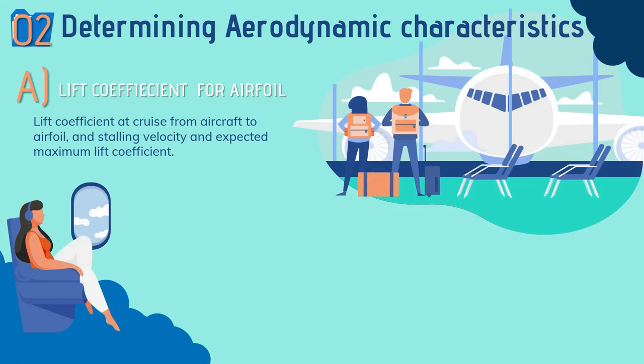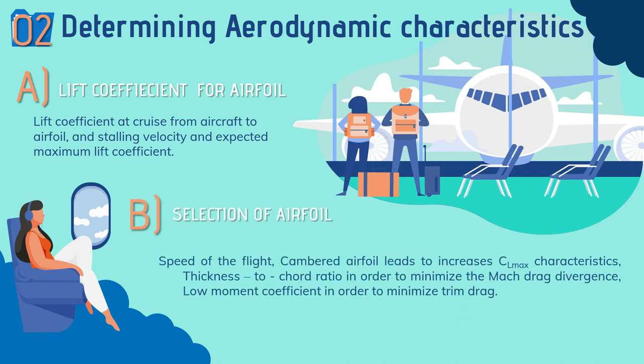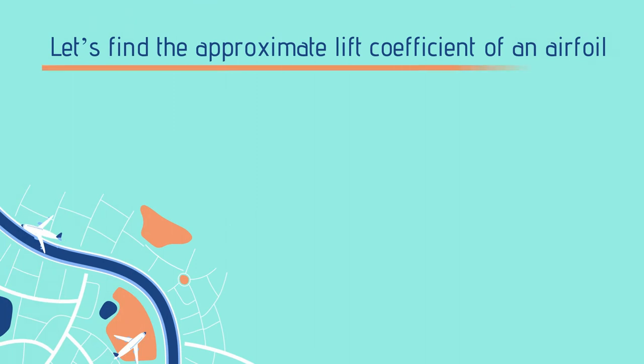To satisfy the fuel tank volume requirement, it is necessary to choose the wing section thickness, which involves selecting the airfoil with respect to the corresponding flight velocity. Airfoil selection also depends on lift coefficient, aerodynamic efficiency, moment coefficient, and other parameters like wing area and sweep angle. Let's find the approximate CL of the airfoil.